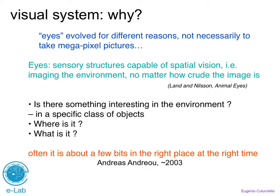There are sensory structure capabilities of spatial vision — imaging the environment, no matter how crude the image is. As my thesis advisor Andreas used to say, the most important thing about a visual system is just to extract a few bits, a few amount of information in the right place at the right time. Is there something interesting in the environment, in a specific class of object — where it is and what it is? Those are really the questions that the human visual system, or any other animal visual system, has evolved to answer.